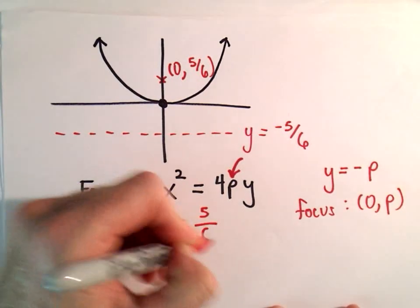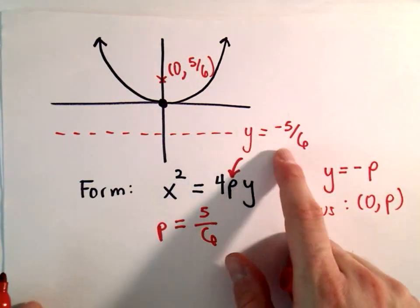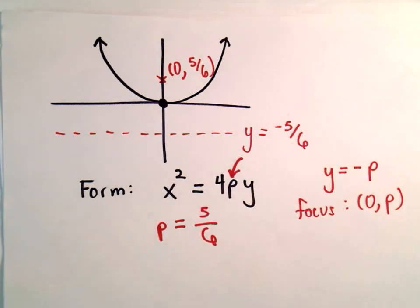So our p-value will be 5 over 6. Again, just based on the directrix, you can just take the opposite sign, and that's your p-value.